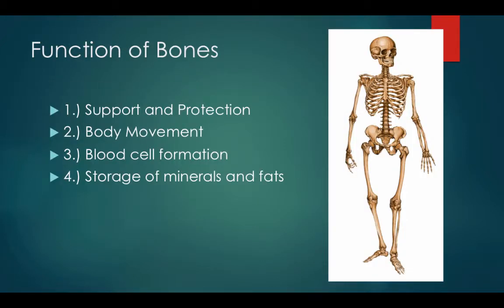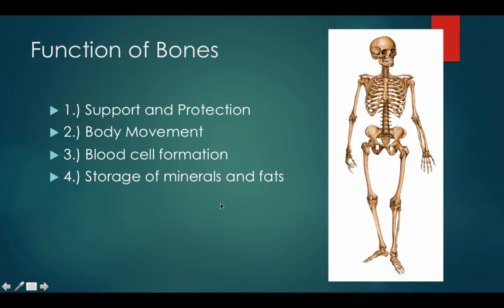Now let's talk about the functions of bones. Number one is support and protection — the vertebrae helps support and keep the body upright, while the cranium helps to protect the brain. Number two is body movement: the bones and joints work together with the muscles to enable us to walk, run, and jump. Number three is blood cell formation — blood cells are made in the ribs and the limbs, in the spongy bone. And number four is storage of minerals and fats — bones are the largest supply of calcium in the body.